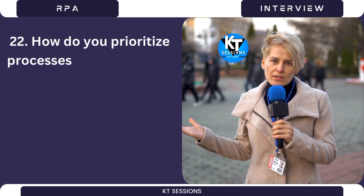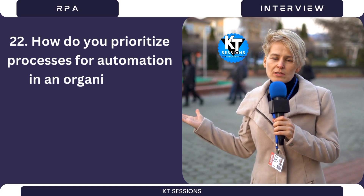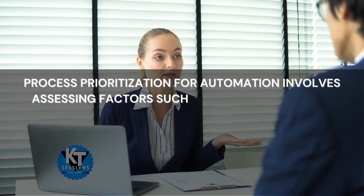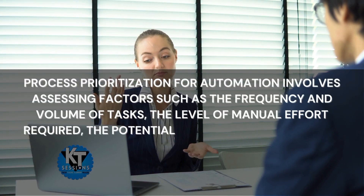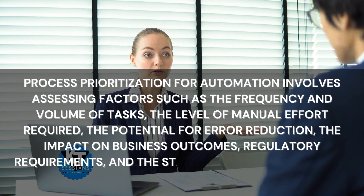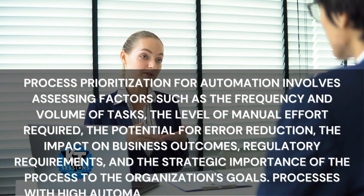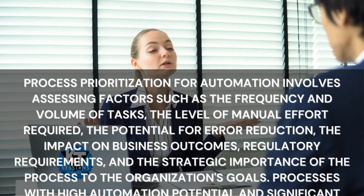Question 22: How do you prioritize processes for automation in an organization? Process prioritization for automation involves assessing factors such as the frequency and volume of tasks, the level of manual effort required, the potential for error reduction, the impact on business outcomes, regulatory requirements, and the strategic importance of the process to the organization's goals. Processes with high automation potential and significant business impact are prioritized.